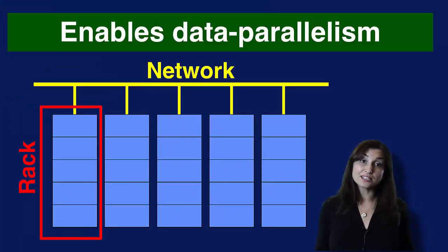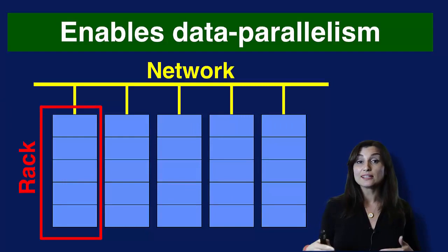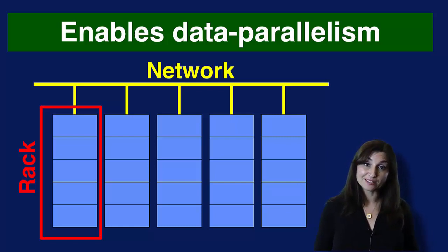Such architectures enable what we call data parallelism. In data parallelism, many jobs that share nothing can work on different data sets or parts of a data set. This type of parallelism sometimes gets called job level parallelism, but in this specialization, we will refer to it as data parallelism in the context of big data computing.